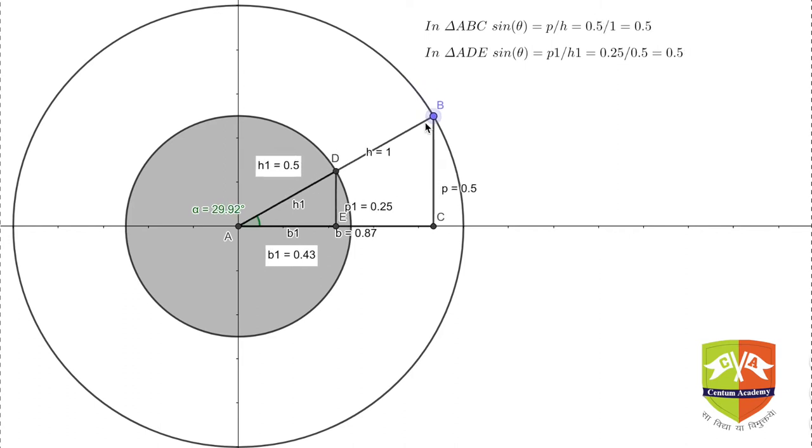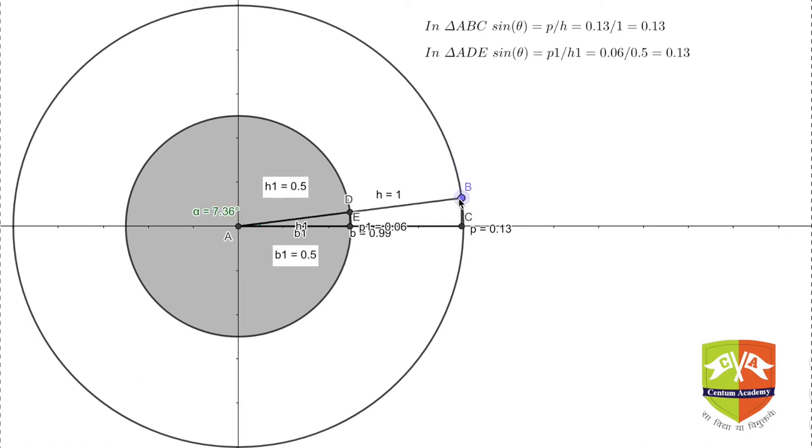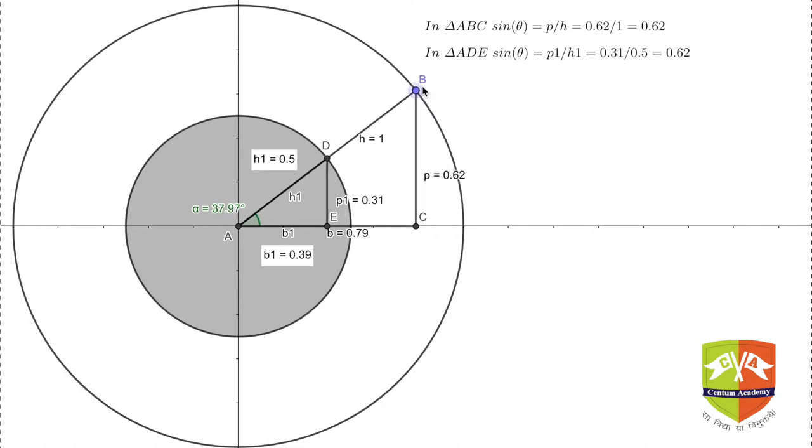As I'm decreasing the value of theta, the sine theta value is not changing. In both the triangles, sine theta value stays the same.